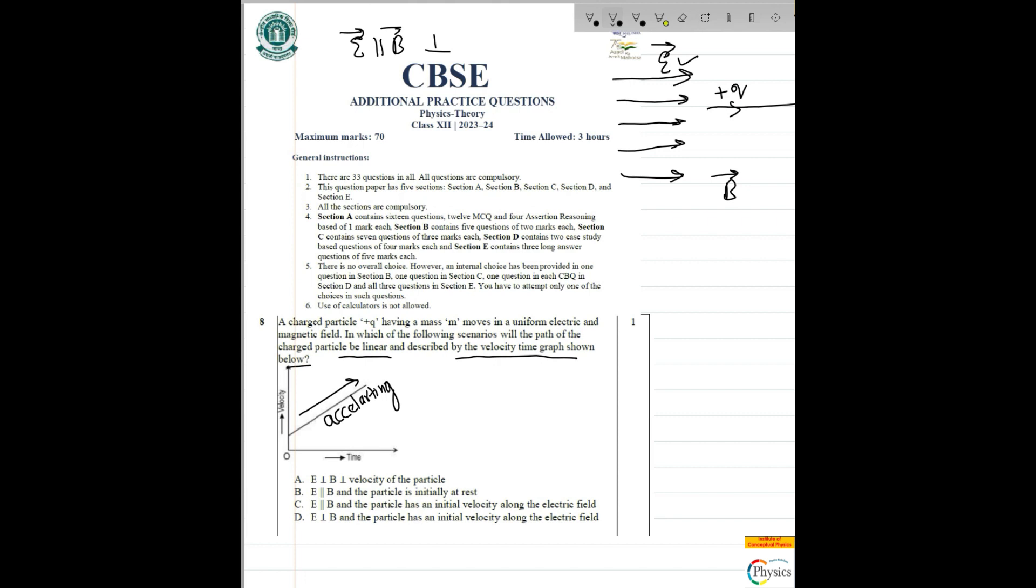Assume this is your electric field and the velocity is in the rightward direction. And the magnetic field is, say, inwards. Just for the sake of it. So magnetic field is inward, it's a uniform magnetic field.